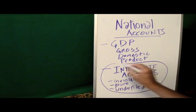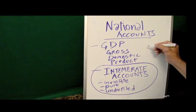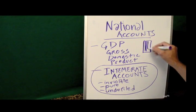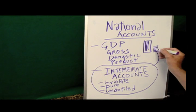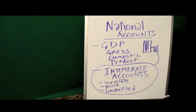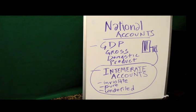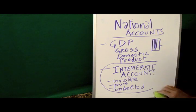Intemarate accounts should not be seen as a replacement for GDP, but rather as a side table. Intemarate means inviolate, pure, undefiled, and I think it's an appropriate way to describe ecological accounting.